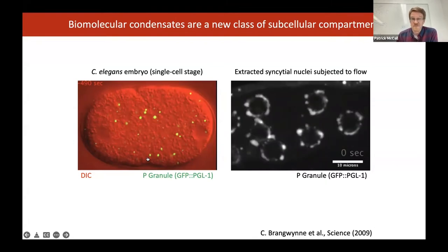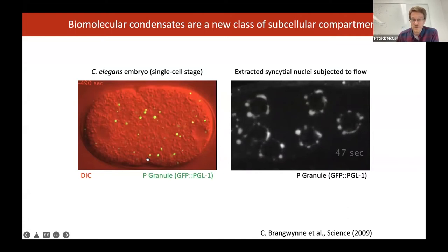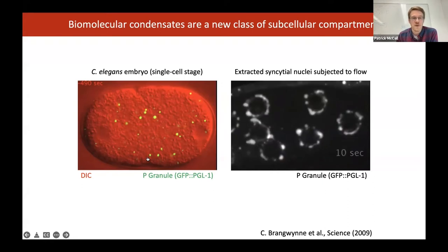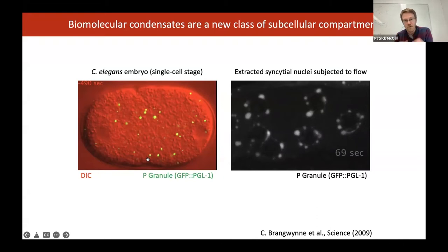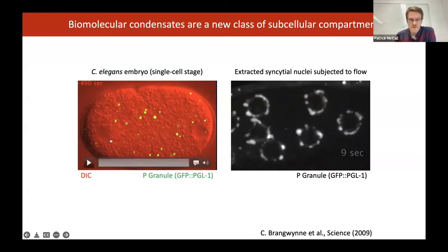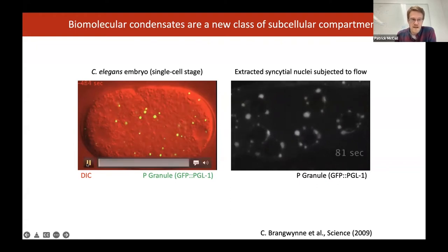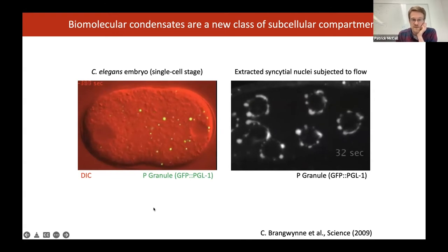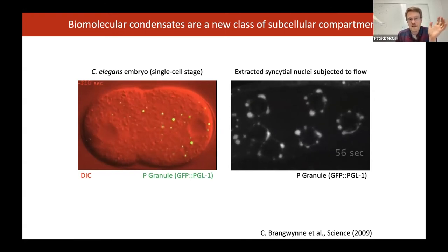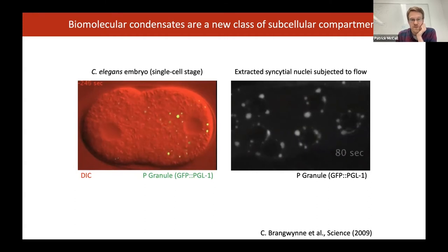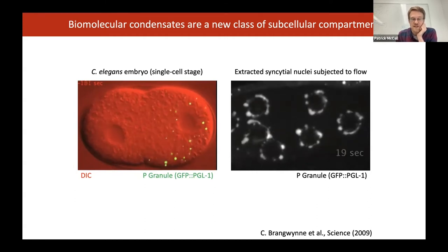What's changed recently is the recognition that we can describe their formation and some of their material properties by thinking of them as demixed phases, rather than solid-like aggregates. These are now classic examples taken from the early C. elegans embryo. On the left, we're looking at what are called P granules — germ granules. It's important that they get segregated before the first cell division because they specify the fate of the germline.